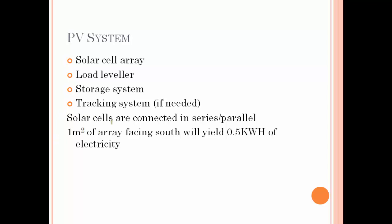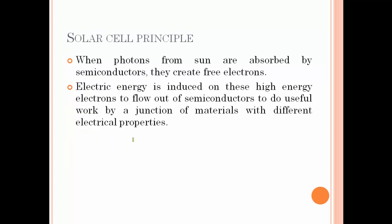Solar cells are connected in series or parallel. One meter square of array facing south will yield 0.5 kilowatt-hour of electricity. The solar cell principle: when photons from the sun are absorbed by semiconductors, they create free electrons. Electrical energy is induced on these high-energy electrons to flow out of the semiconductors to do useful work by a junction of materials with different electrical properties — the p-junction and n-junction.